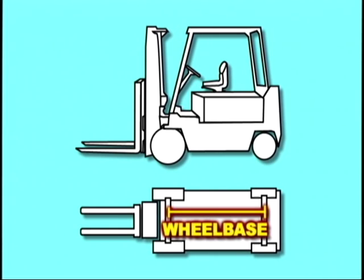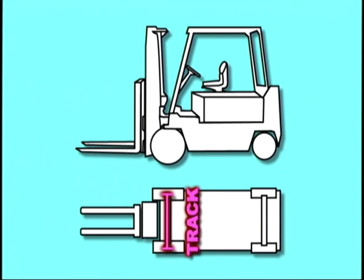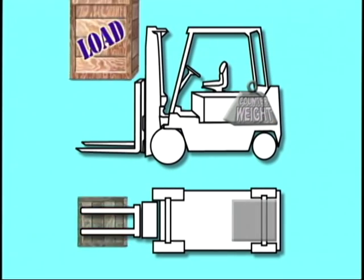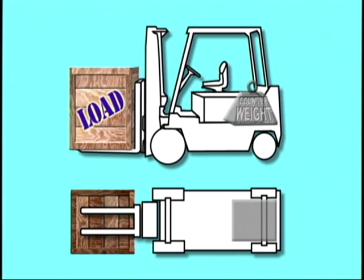The forklift's wheelbase, or distance between the centerline of the vehicle's front and rear wheels, the track, or the distance between wheels on the same axle of the truck, and height, as well as the location of the counterweight and the load's distribution all affect how it will handle.